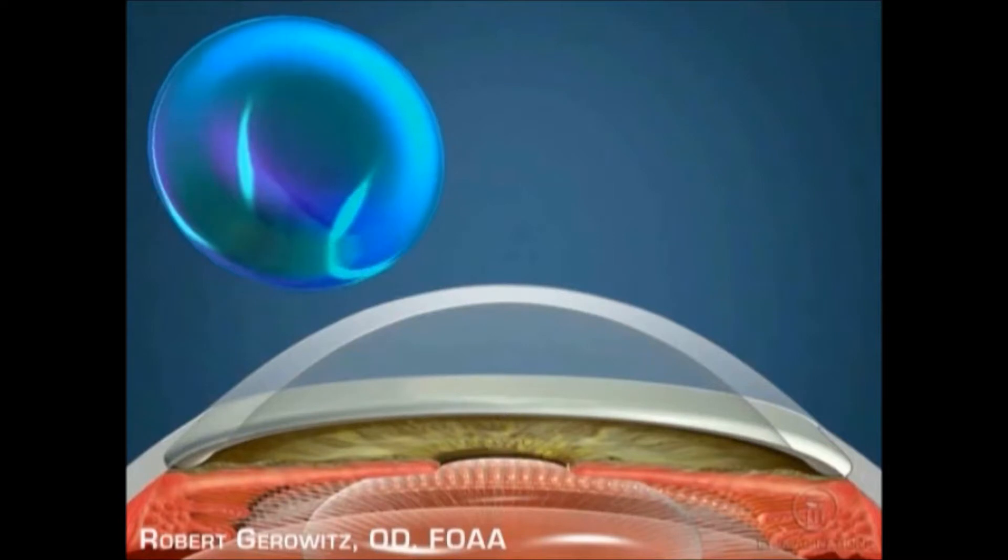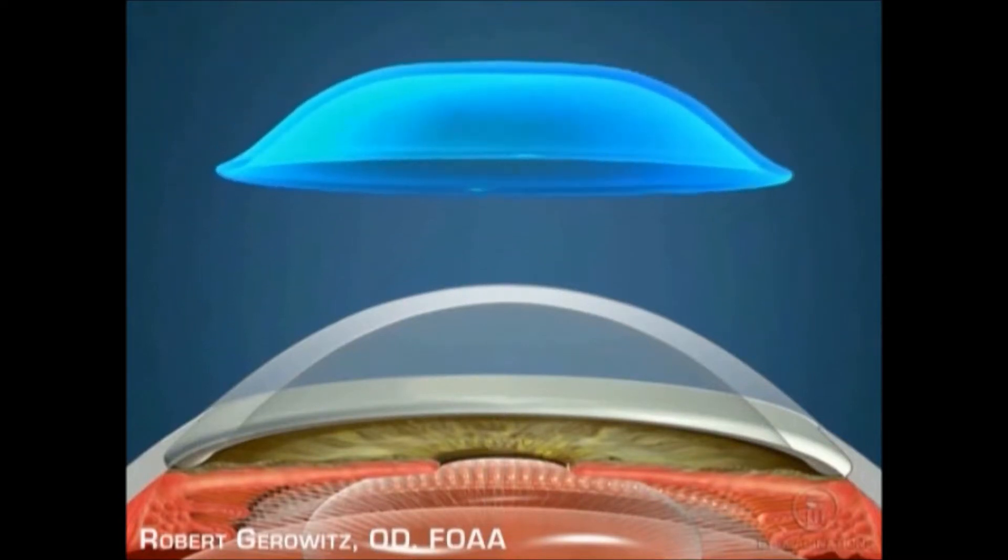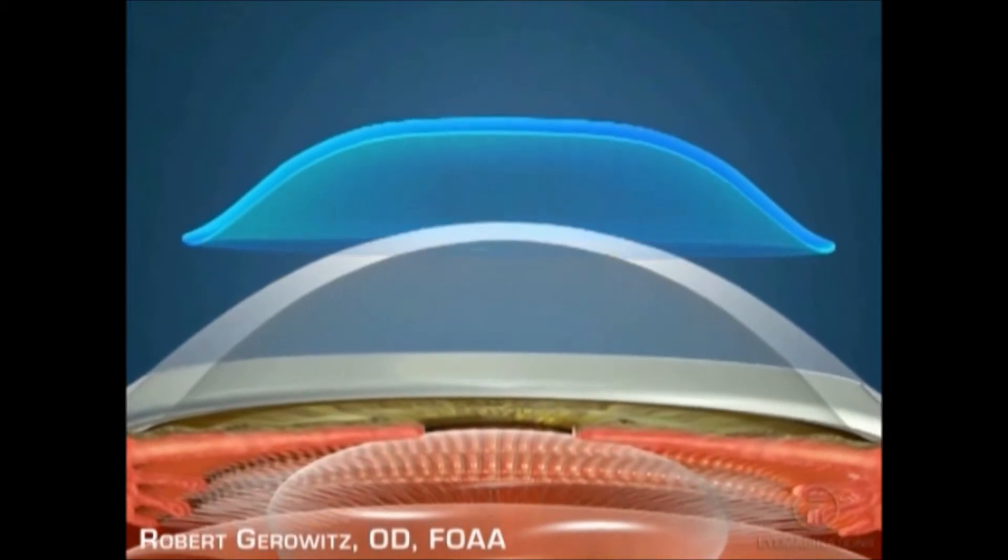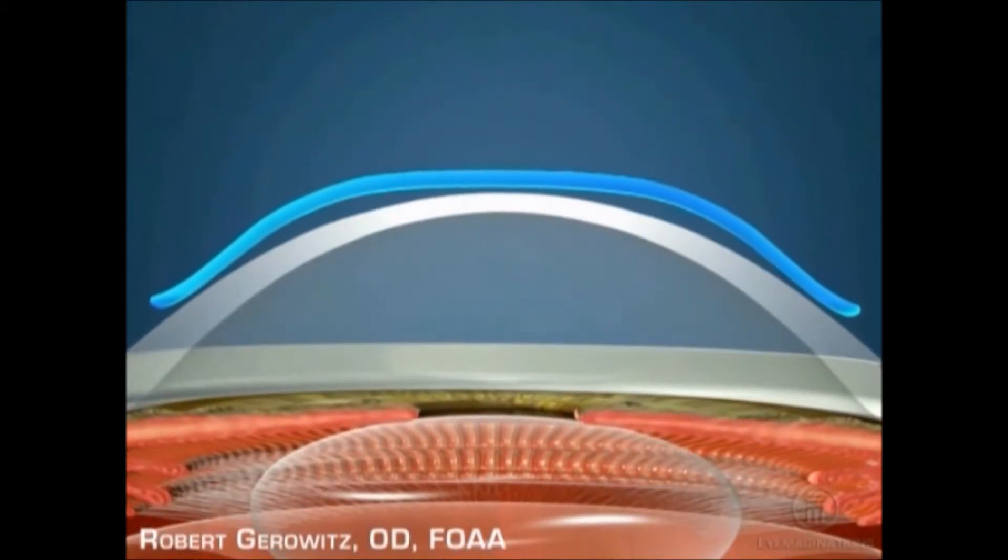Corneal molding treatment involves changing the curvature of the cornea by temporarily molding its shape using a gas permeable contact lens. The central portion of the lens fits closer to the eye than a standard contact lens, exerting a gentle pressure.